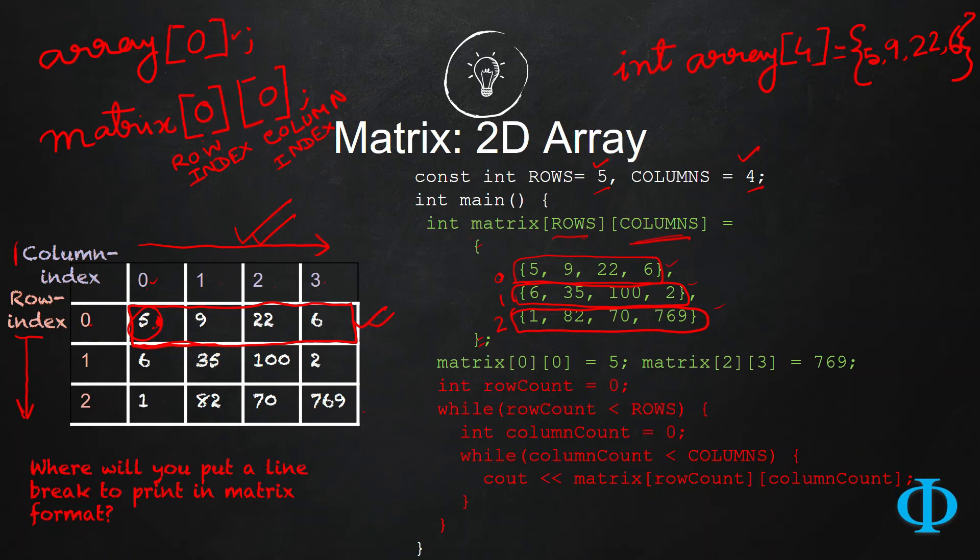That's what matrix is. Whenever you want to access a matrix, just use both the index like row index followed by column index. Here, matrix[0][0] equals 5. This is the same value as in here. And matrix[2], that is row 2 and column 3. This element is 769 in here. You can also change the elements just like the way you have done in case of array. The only difference is you have to use these two indices.